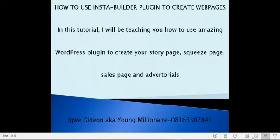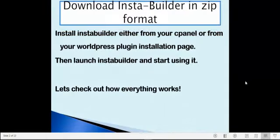In this tutorial, I'll be teaching you how to use an amazing WordPress plugin called Insta Builder to create story pages, quiz pages, sales pages, and advertorials. The first thing to do is download Insta Builder in zip format, install it from your cPanel or from your WordPress plugin installation page, then launch Insta Builder and start using it.